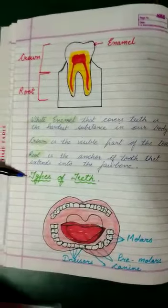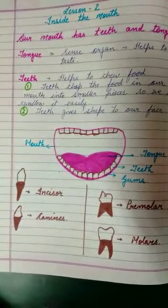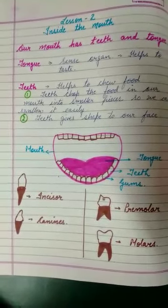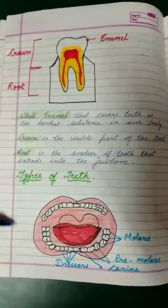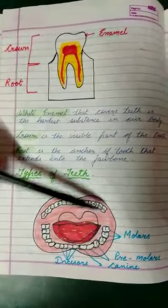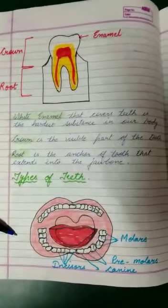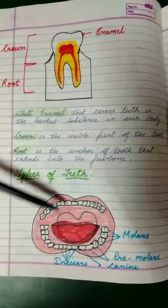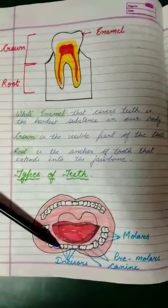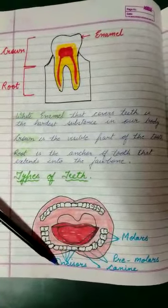Now we will study the types of teeth. I have made four diagrams: incisor, canine, premolars, and molars — four different types of teeth. Looking at an open-mouth diagram, 16 teeth are above and 16 teeth are below, making 32 in total. The front teeth at the top and bottom are labeled as incisors.